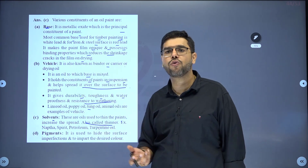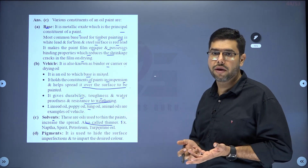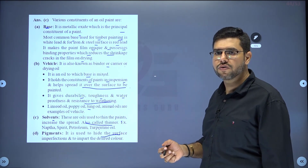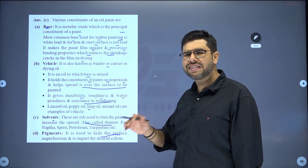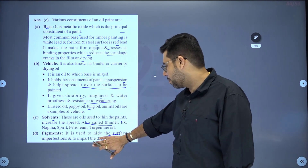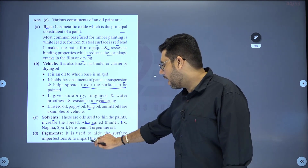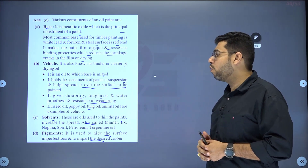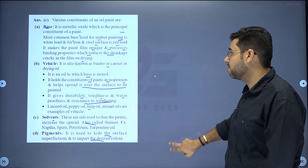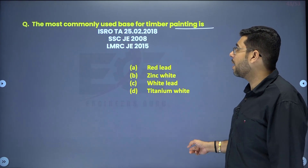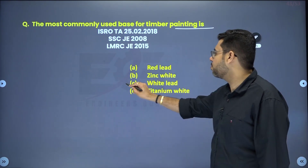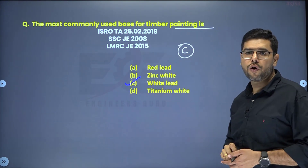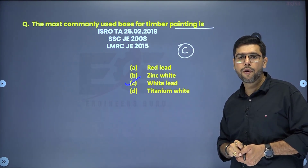So these are the four basic constituents of paint: base, vehicle, thinner, and pigment. Please remember these. The base used for timber paint is white lead. White lead is the base used for timber paints — got my point.